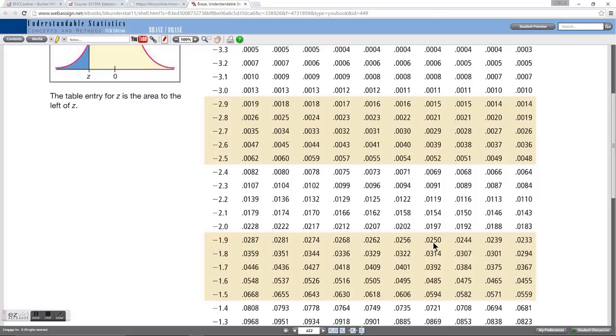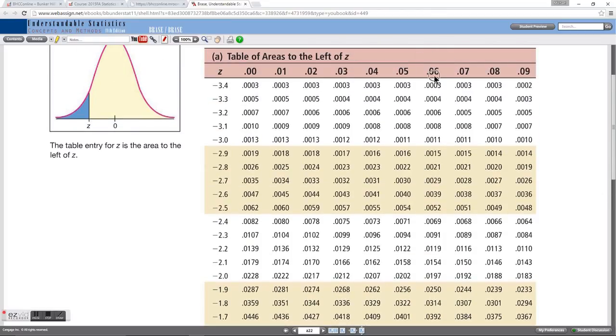Now what z value is associated with this area of 0.025? Well, what's the z value? Negative 1.96. An area to the left of 0.025 is equivalent to a z value of negative 1.96.